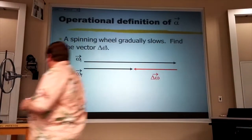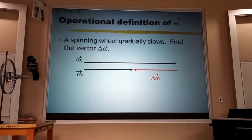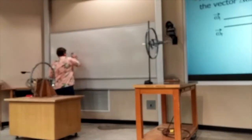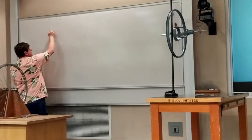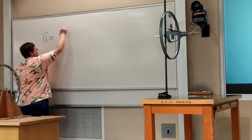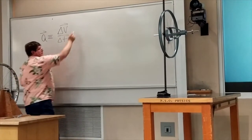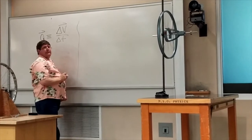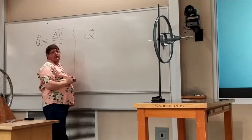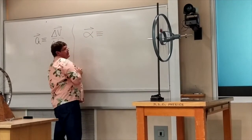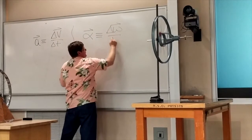Now, in the olden days — by that I mean the first part of the semester — we defined linear acceleration to be the change in linear velocity that happened in one second. Well, now we're going to define something called angular acceleration. We use alpha to represent that, and that's just going to be how much the omega vector changes each second.